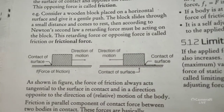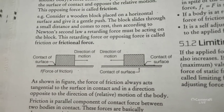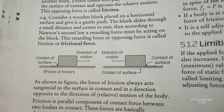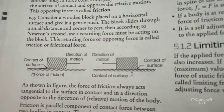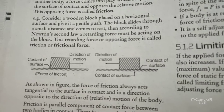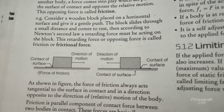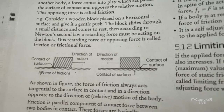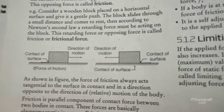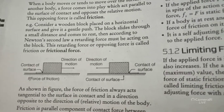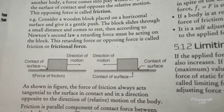For example, in the diagram: contact of surface, direction of motion in the forward direction — so friction force acts in the opposite direction. If the direction of motion is in the backward direction, then the contact of surface is on the backward side and frictional force acts in the forward direction. Frictional force is always opposite in direction to the motion.